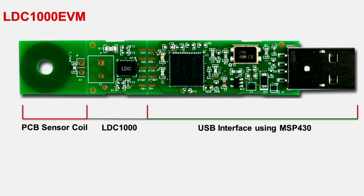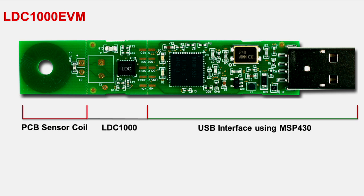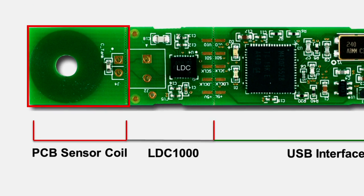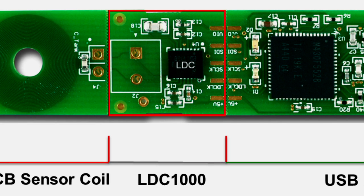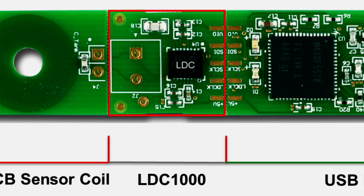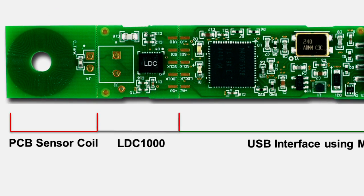This EVM is uniquely designed to give you as much flexibility in your design as possible. So each section can be separated by just snapping a portion off. The sensor coil can be snapped off and you can use your own customized coil for your specific application. The LDC-IC itself can be snapped off and you can interface the LDC to an existing microcontroller in your system.